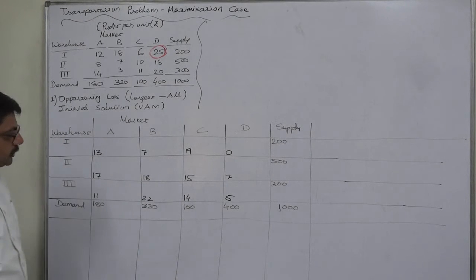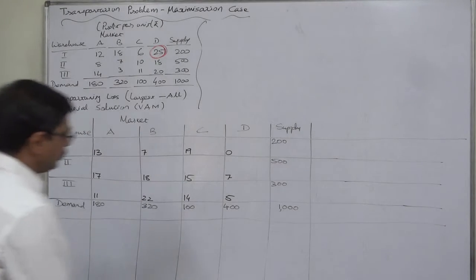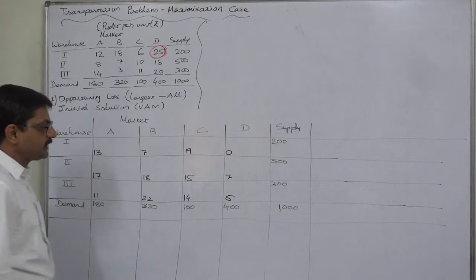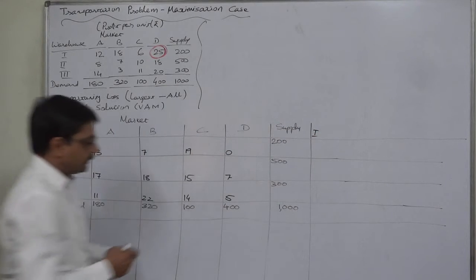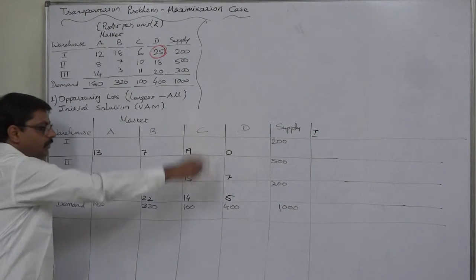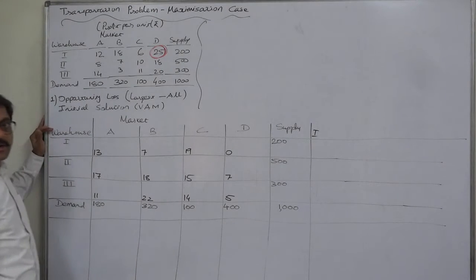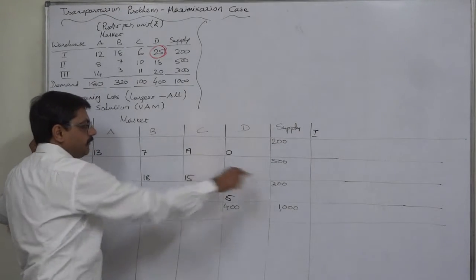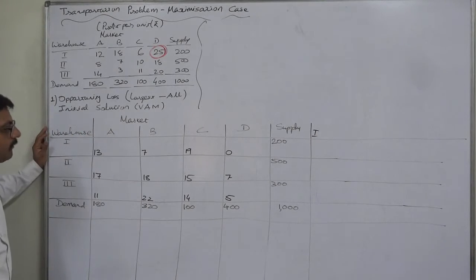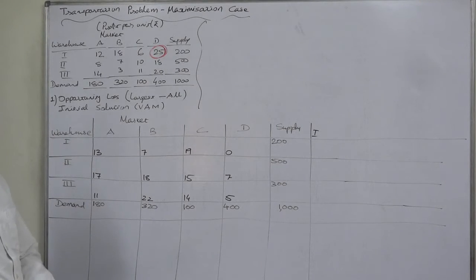This is the opportunity loss. Now we are going to use VAM — Vogel's Approximation Method — to get the initial solution. For that purpose we have to calculate penalties. The penalty for any row or column is the difference between the least cost and the immediate higher cost. The penalty can never be zero or negative.